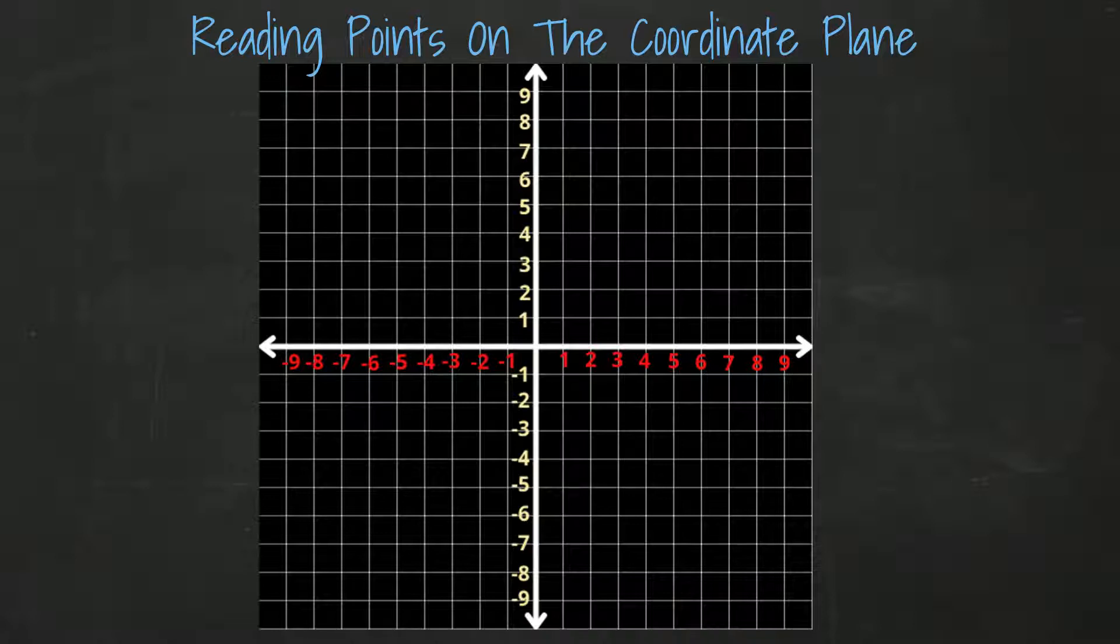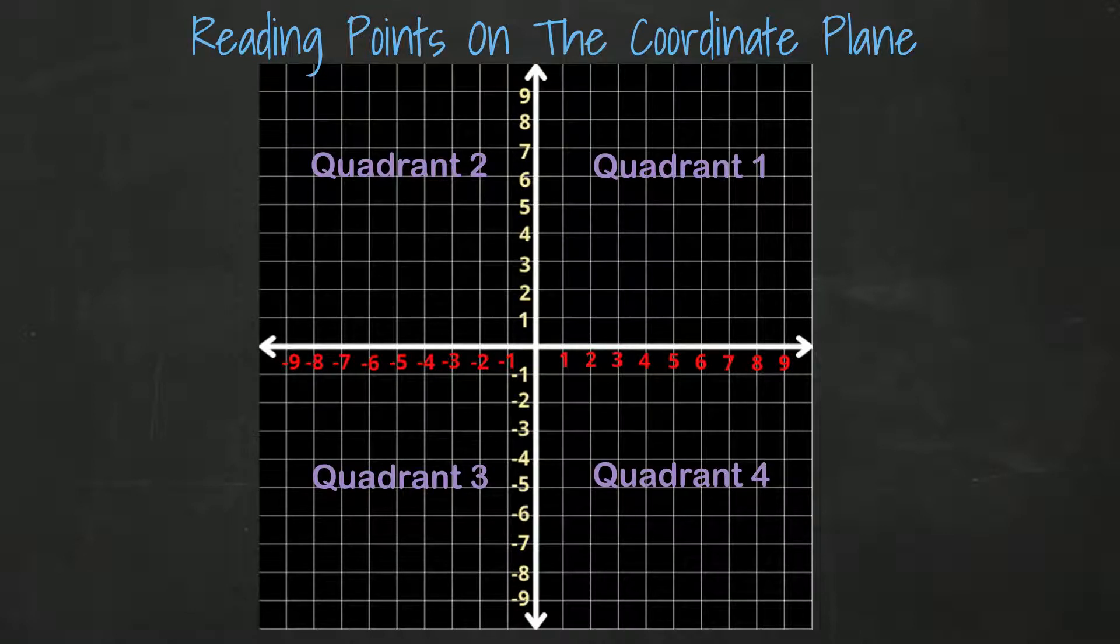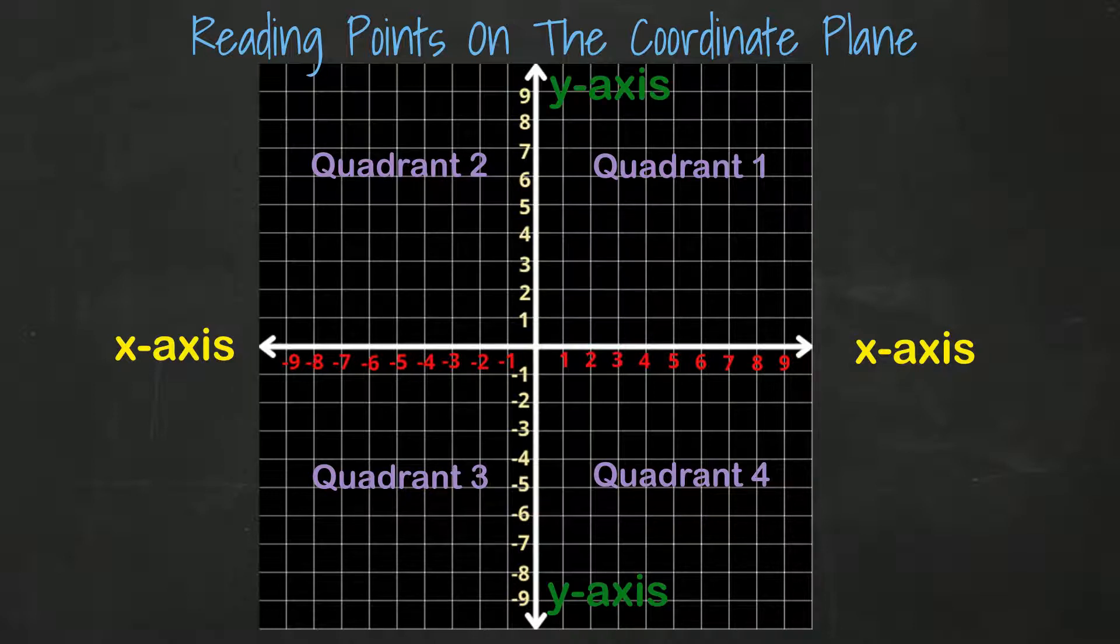A real quick refresher, the coordinate plane is a two-dimensional area or flat surface that can be used to graph points or coordinates. The coordinate plane is broken into four quadrants that are separated by an x-axis and a y-axis. The x-axis runs from left to right and the y runs up and down.